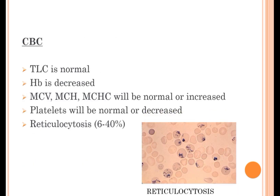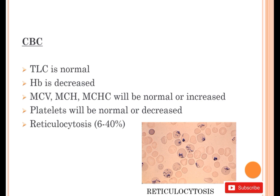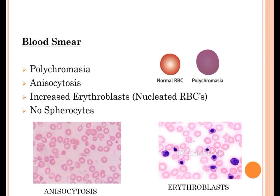Complete blood count findings: TLC is normal, Hb is decreased, MCV, MCH, and MCHC will be normal or increased, whereas platelets will be normal or decreased, and reticulocytosis is seen at 6–40%. Blood smear shows polychromasia, anisocytosis, spherocytes, and increased erythroblasts.